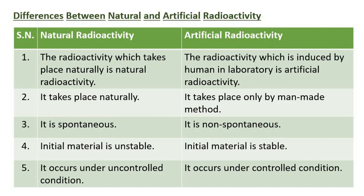The initial material is unstable in natural radioactivity, whereas the initial material is stable in artificial radioactivity. Natural radioactivity occurs under uncontrolled conditions, while artificial radioactivity occurs under controlled conditions.